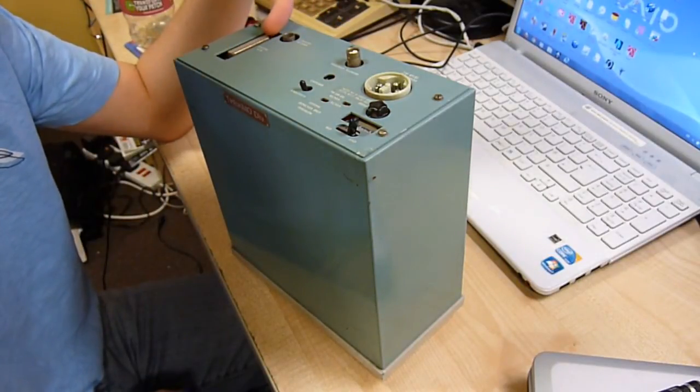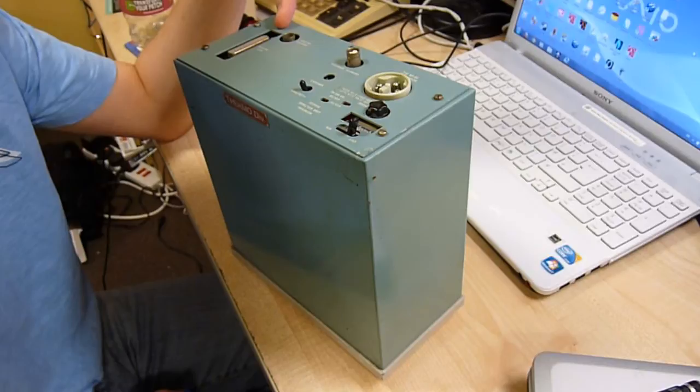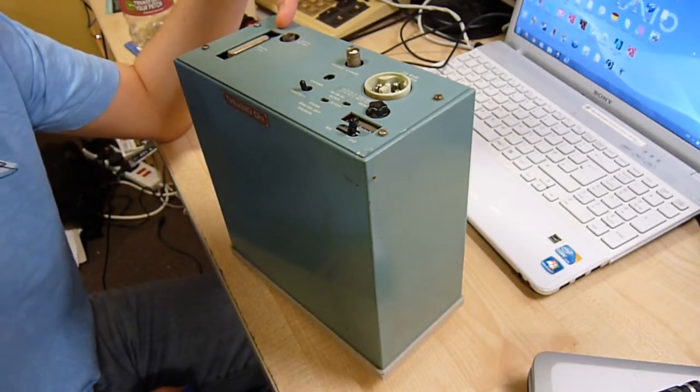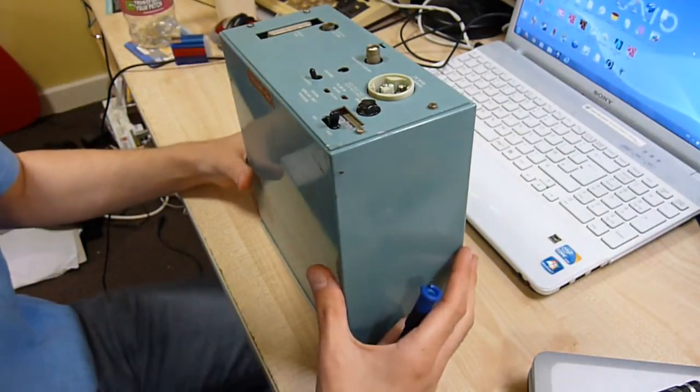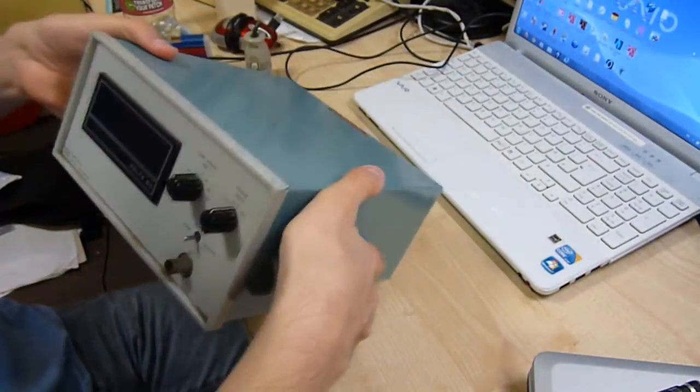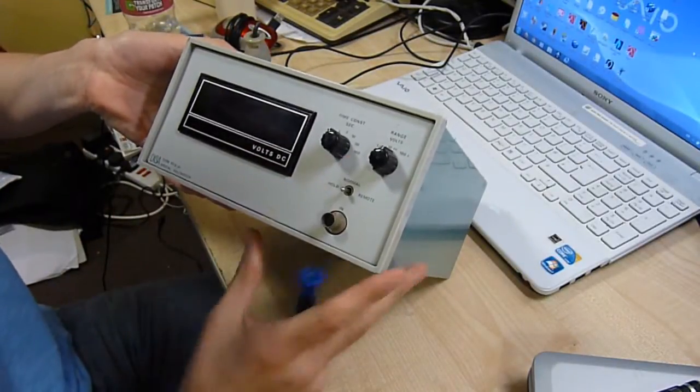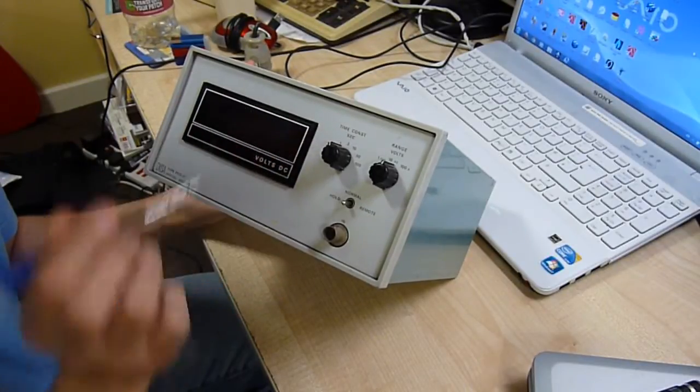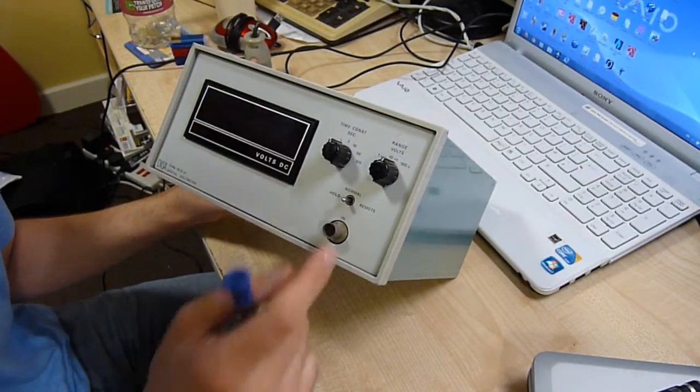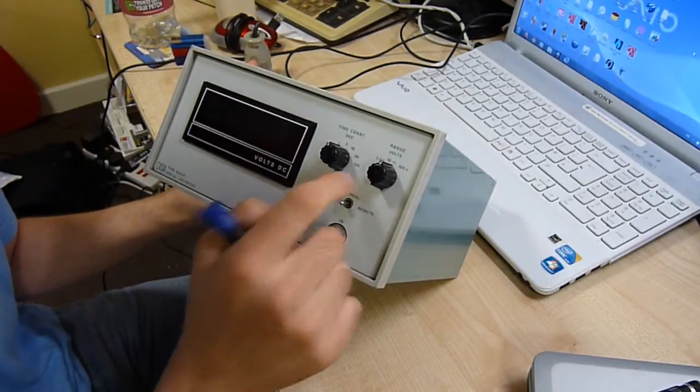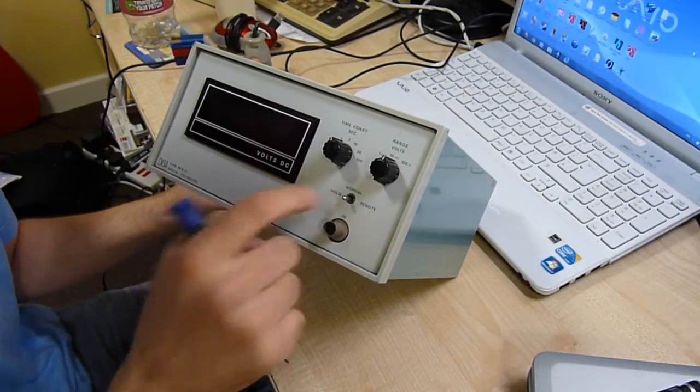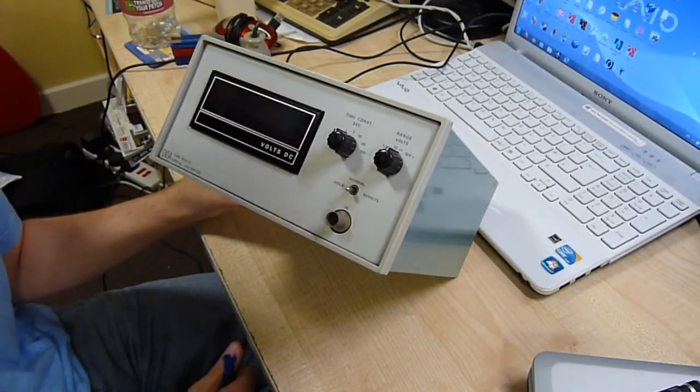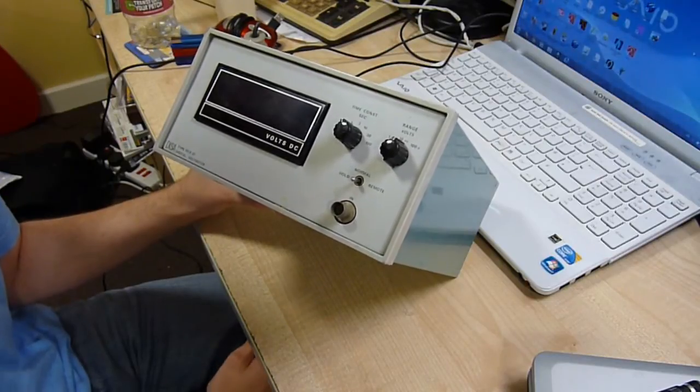OK, I appreciate this is lab equipment, but exactly why does lab equipment this old need a computer interface on it, bearing in mind it doesn't actually have a microprocessor inside it anywhere? On the front we have the volts range which is up to a hundred volts from one volt, and time constant, maybe that's refresh rate, and then you have the input normal mode, remote mode for remote control, and hold mode, which I'm not sure what that does. I can find absolutely zero information on this on the internet.